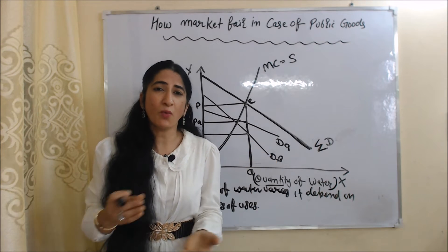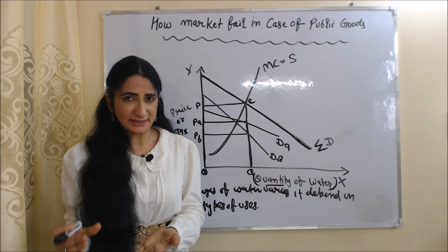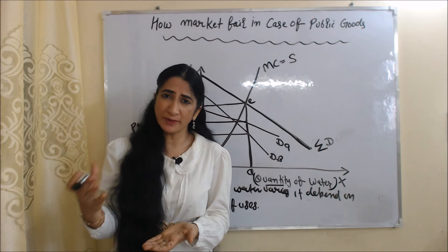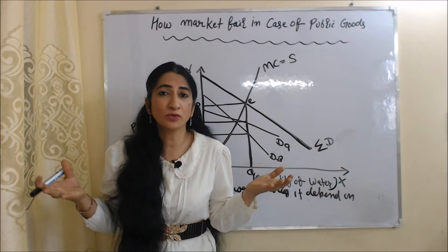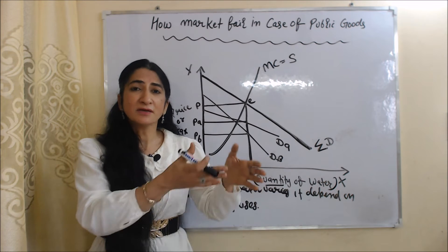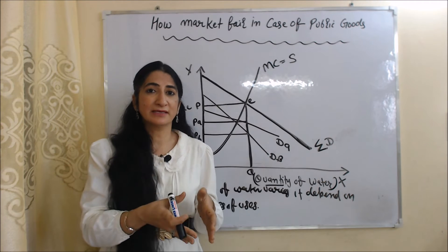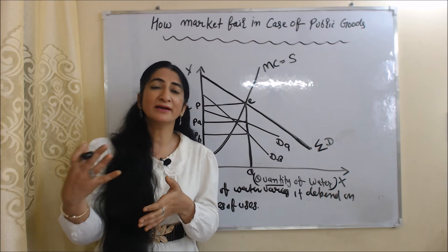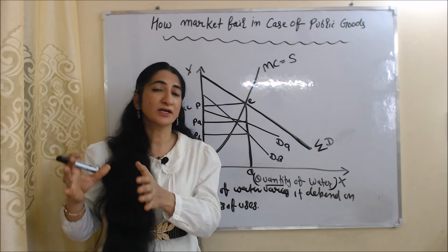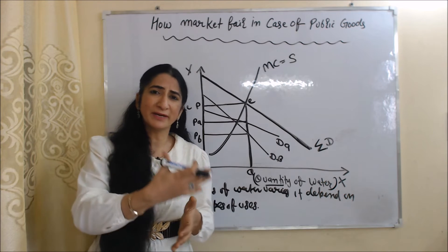Now we will see why the market fails in case of public goods. According to market mechanism, if you use a particular good, you pay for it — more use means more payment. But this is not applicable to public goods. In the case of public goods, some people pay higher taxes and some pay lower taxes, yet they have an equal right to use public goods. For example, when you go to a public park, nobody asks whether you pay tax or not.